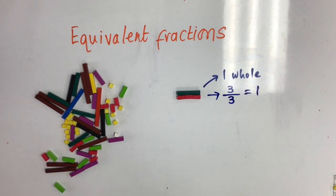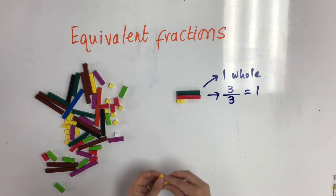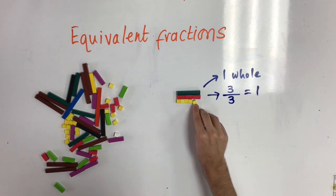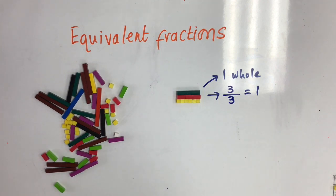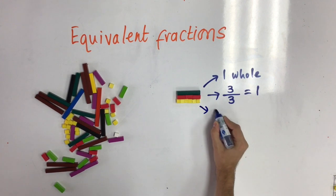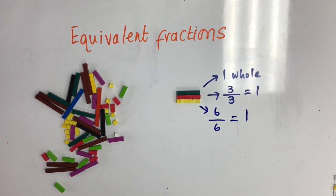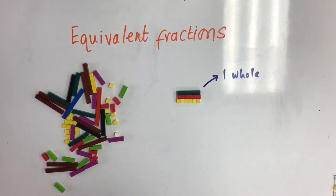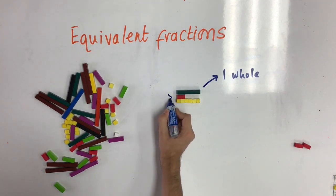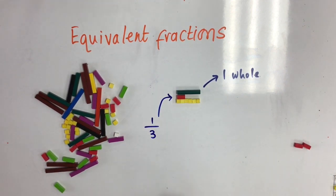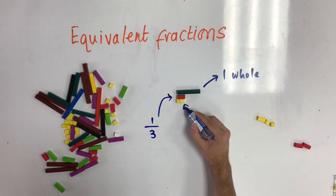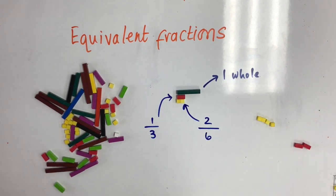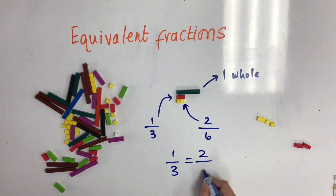By using the yellow rods, I know I can fit six underneath exactly. That means I can split the rod into sixths, and that six sixths is the same as one whole. So what other fractions can I find using this knowledge? If I take away two of the thirds, I can find out how many sixths fit underneath it. One red rod is one third, which is equal to two sixths. Which means that one third and two sixths are the same.